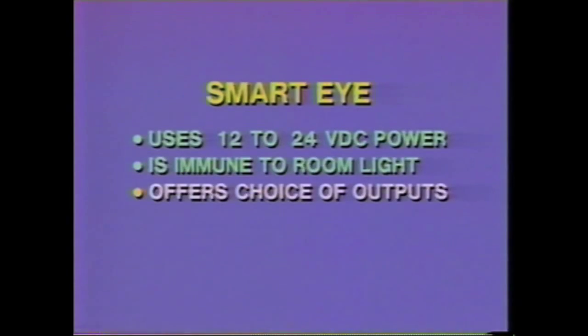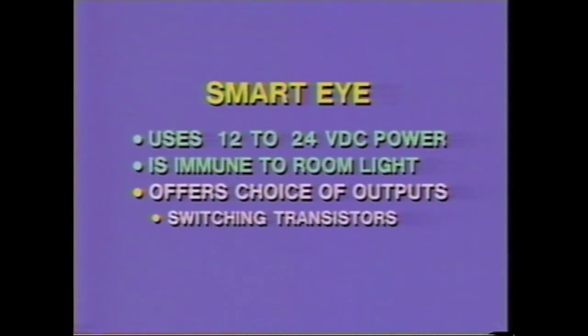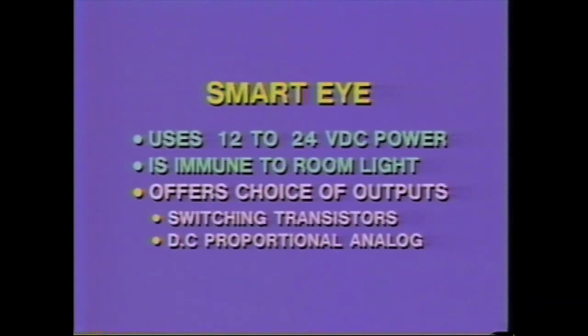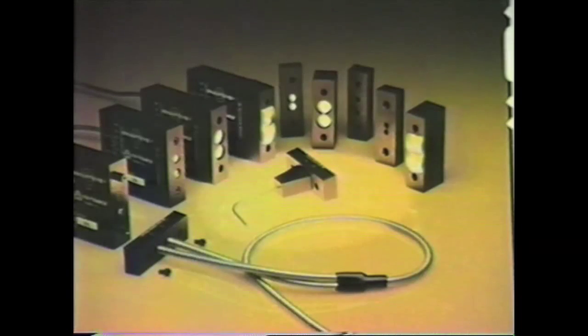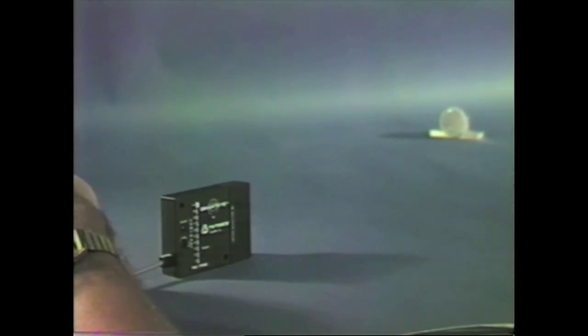Smart Eye gives you a choice of models with different types of outputs: one model has normal digital switching transistors, the other has a DC proportional analog output. Smart Eye also uses changeable optical blocks which permit the same sensor to be used in a wide range of applications. Here we're using the retro-reflective block to send the beam across a large space — notice how easy alignment becomes with the contrast indicator. Here's the short-range optical proximity block, and the converging beam block is excellent for detecting proper fill levels, small parts, or registration marks.